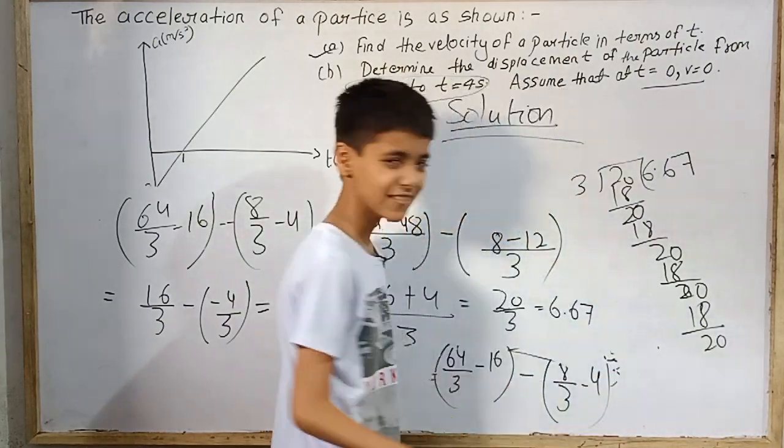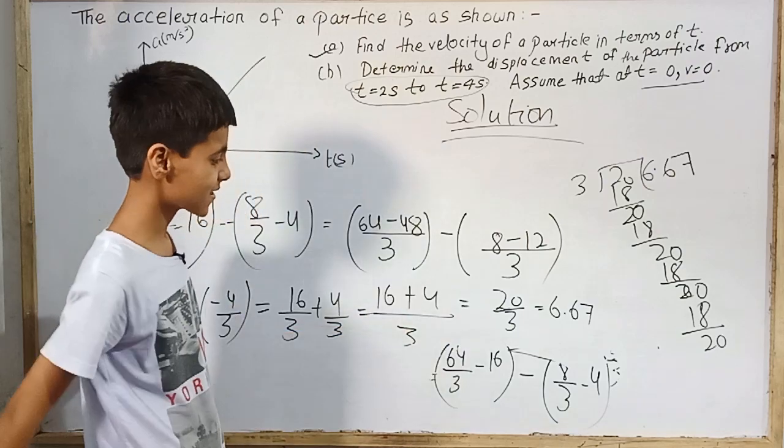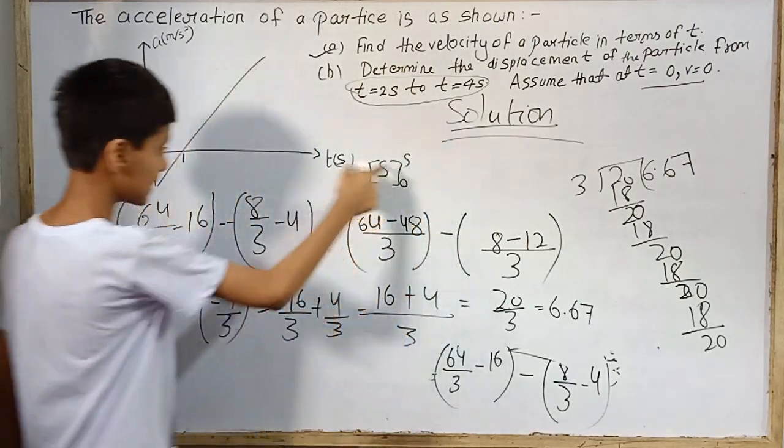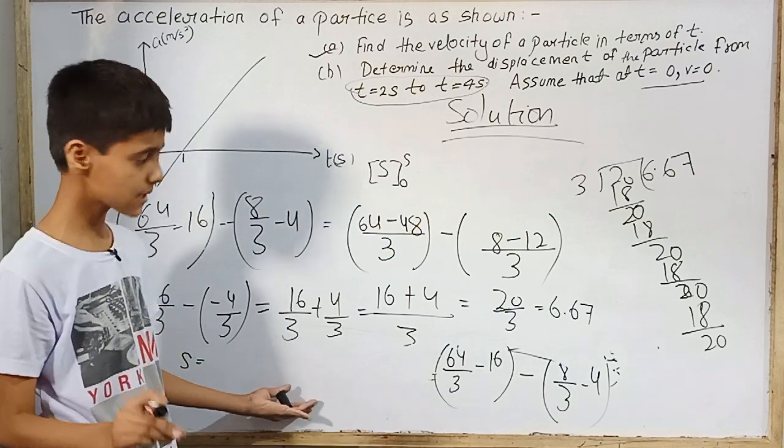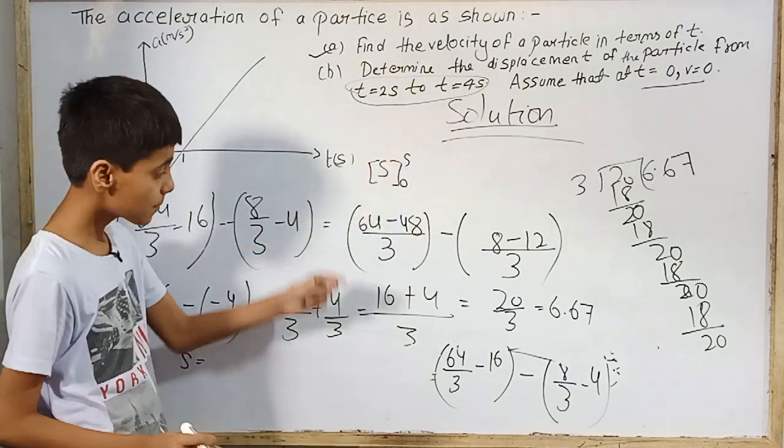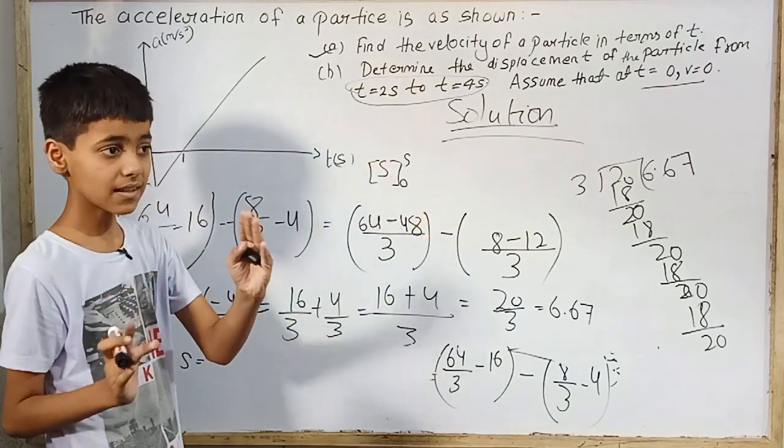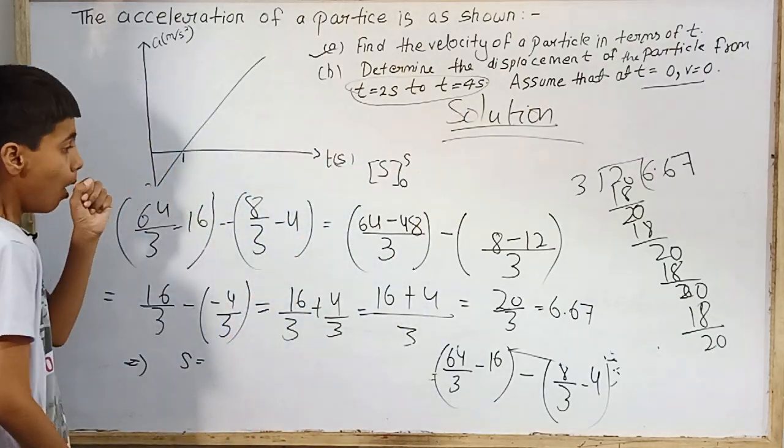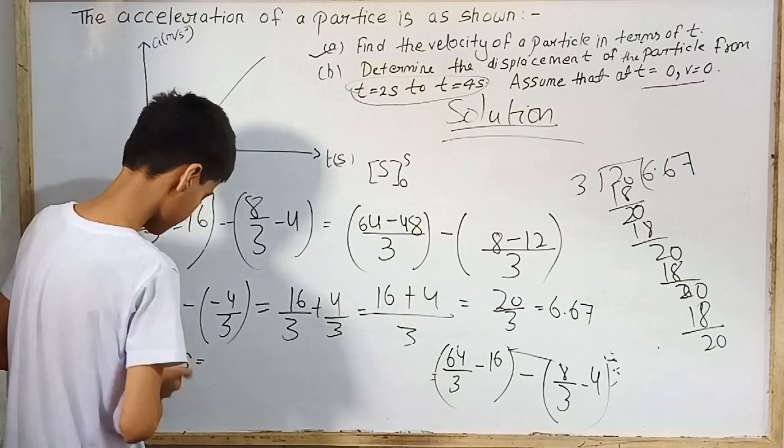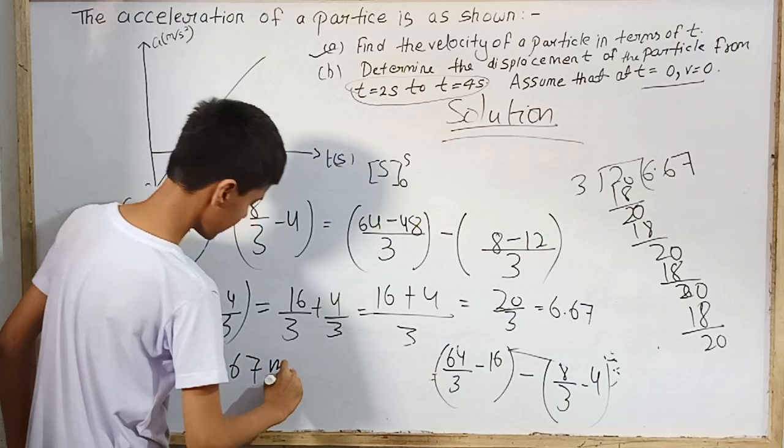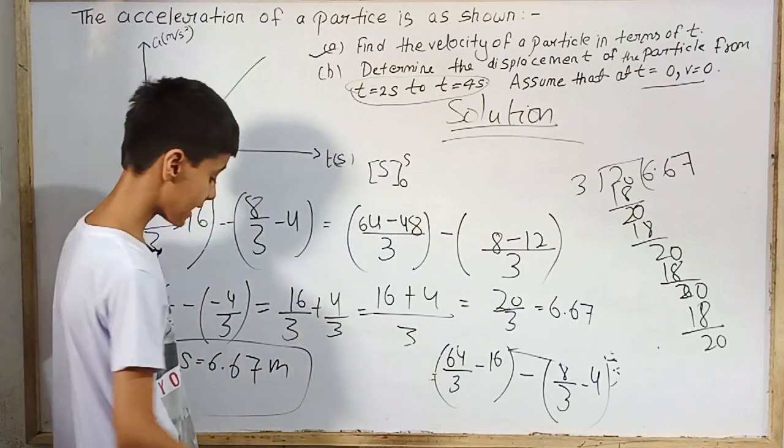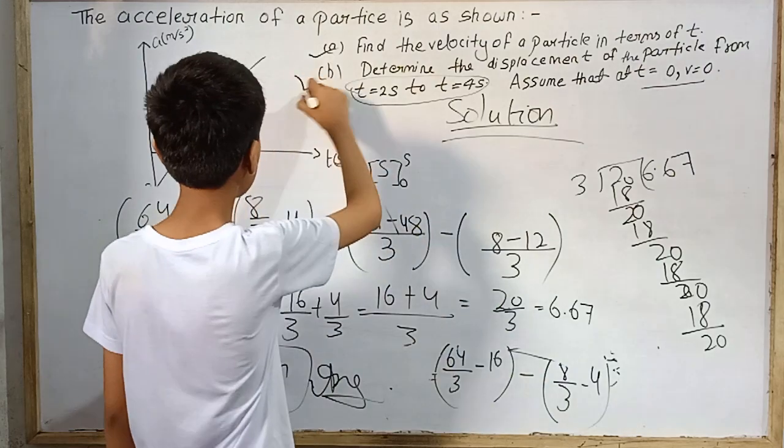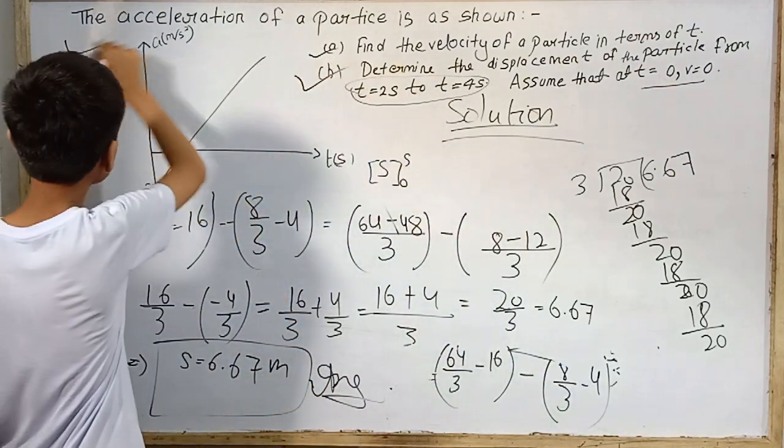So we can just take it as 6.67. S from 0 to S is S itself. This is displacement. So S equals 6.67 in meters, because we had taken all values in SI units. The final answer is also in the SI system of units. So this is 6.67 meters. And hence the problem is solved correctly. This whole problem is solved.